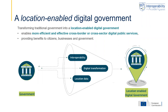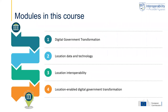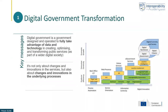Now let us have a closer look at the key conclusions on each of these different elements and modules. The course had four core modules, preceded by an introductory module and followed by this conclusion. The core modules consist of: a module on digital government transformation, a second module on location data and technology, a third module focused on location interoperability, and a fourth module that looked at location-enabled digital government transformation.